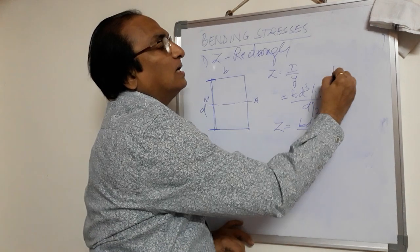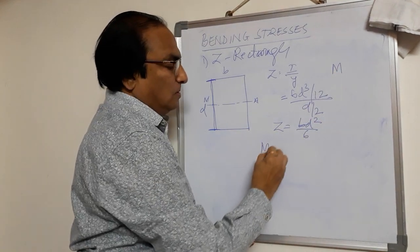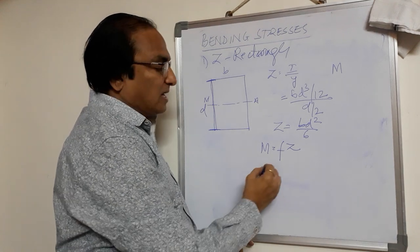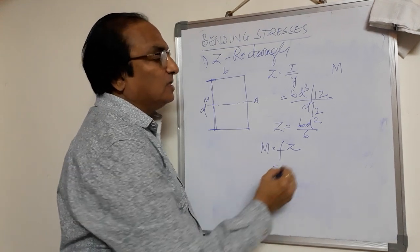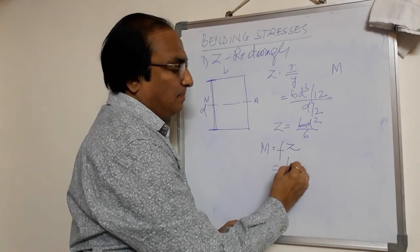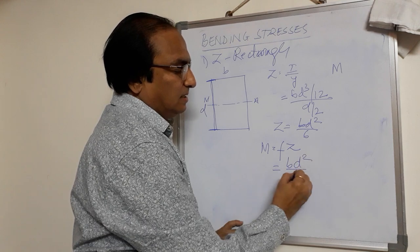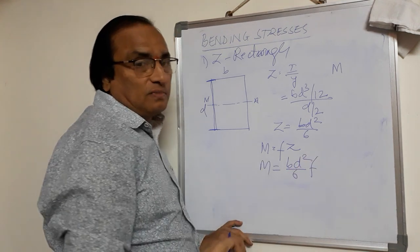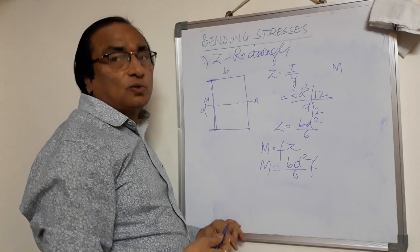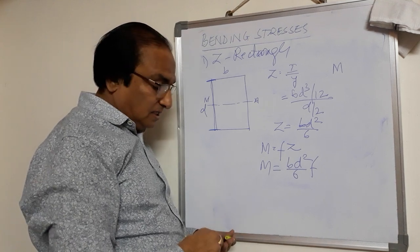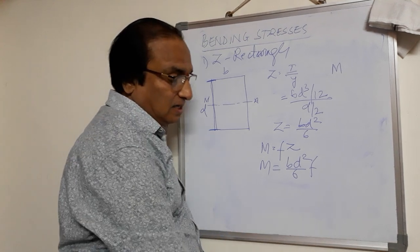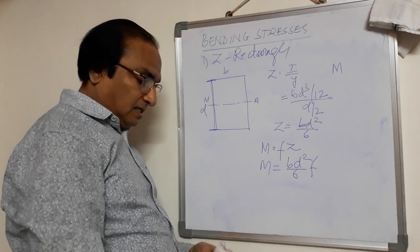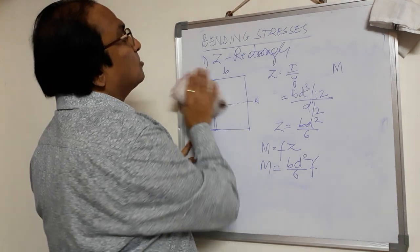We know the relation M = F × Z. So for a rectangular section, M = (BD²/6) × F. You can remember this formula: BD²/6 into F. These are the section modulus values for a rectangular section. Likewise you can find the section modulus for other sections also.